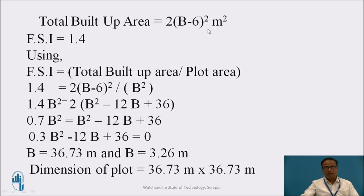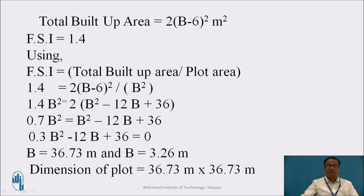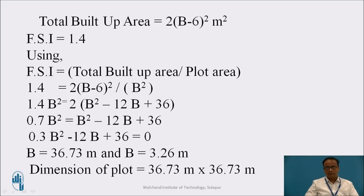Total built-up area = 2 × (b − 6)² square meters. With FSI = 1.4, using the relation FSI = total built-up area / plot area, we get the expression: 0.3b² − 12b + 36 = 0. Solving this expression, we obtain b = 36.73 meters or b = 3.26 meters. We cannot take 3.26 meters as the width of the plot since the side and rear margins are already 3 meters. Therefore, the width of the plot is 36.73 meters, giving a plot dimension of 36.73 meters by 36.73 meters.